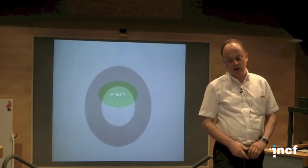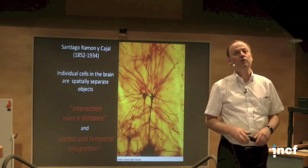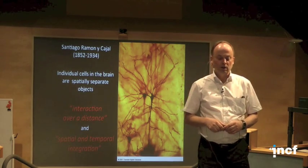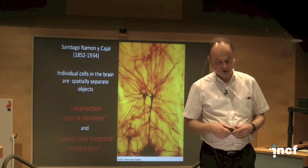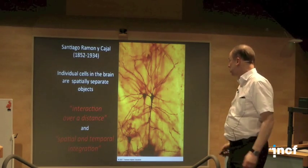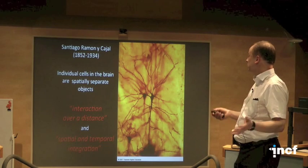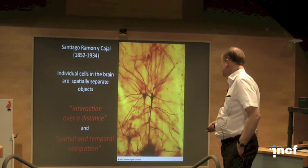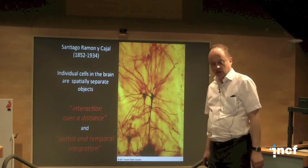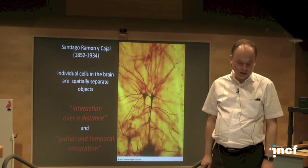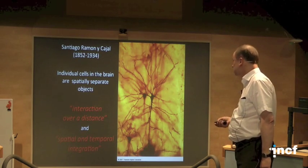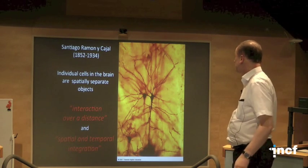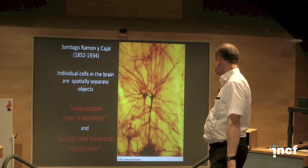Our reference is experiment — mostly experiments done with brain tissues, dead or living. The fundamental thing is that the brain is not simply gray matter as it looks in a lab. It's really structured, highly structured, consisting of individual cells that are spatially separate objects. This is one of the famous pictures taken by Ramón y Cajal using the staining method developed by Golgi.